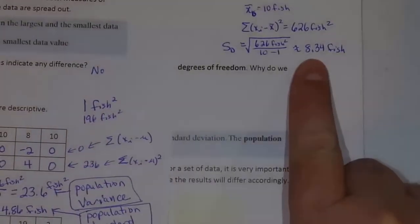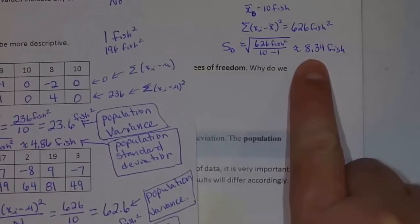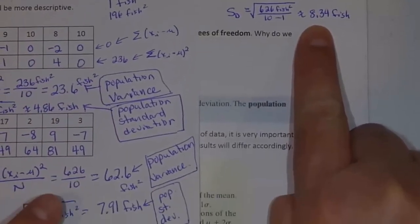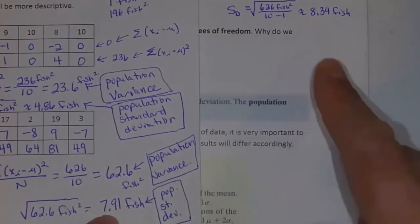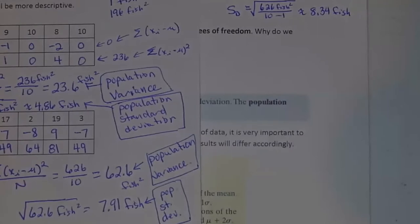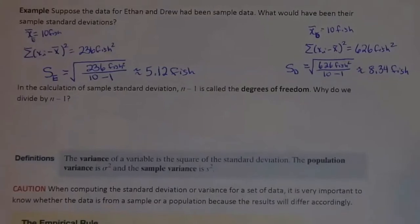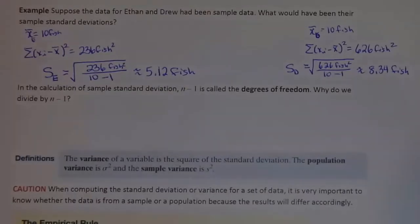Similarly, for Drew, if Drew's data is a sample, his standard deviation is 8.34. If Drew's data is a population, his standard deviation is 7.91. Different calculation. So that means if you are supposed to be finding sigma and you find S, you get the incorrect answer. The only real difference in the calculation is: if it's a sample, you divide by n minus 1; if it's a population, you divide by n.